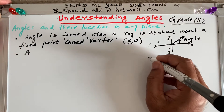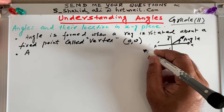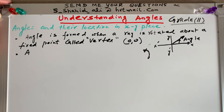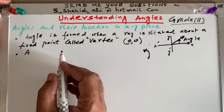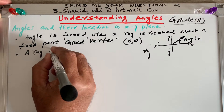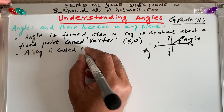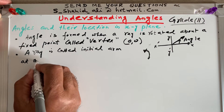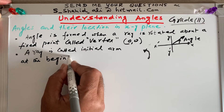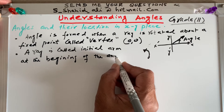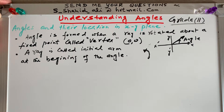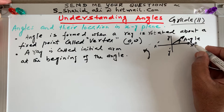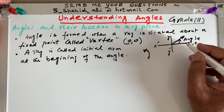What is the initial arm? The initial arm is the beginning of the angle. A ray is called the initial arm at the beginning of the angle, and it can be found only on the positive x-axis. So this is my initial arm, initiating from the positive x-axis.